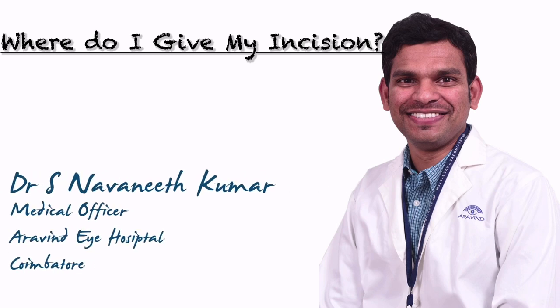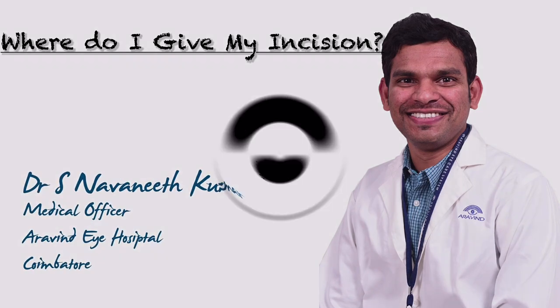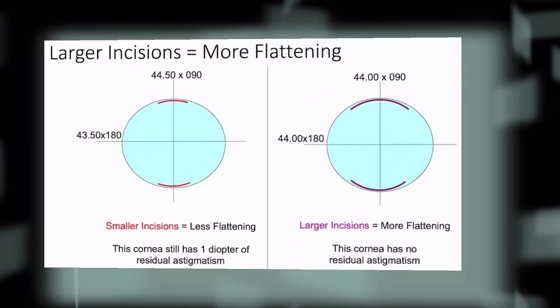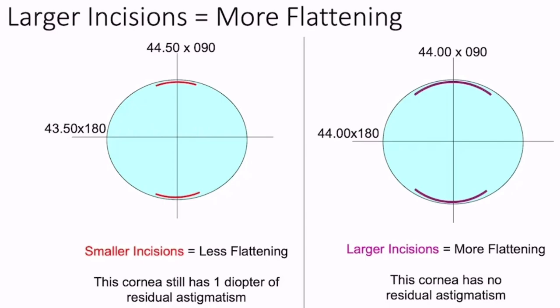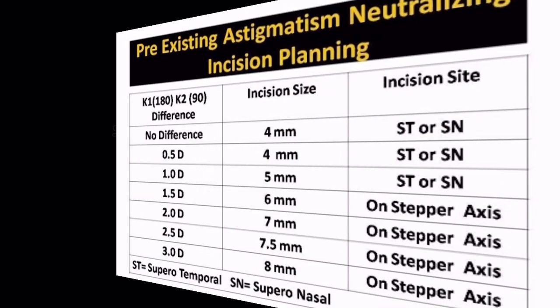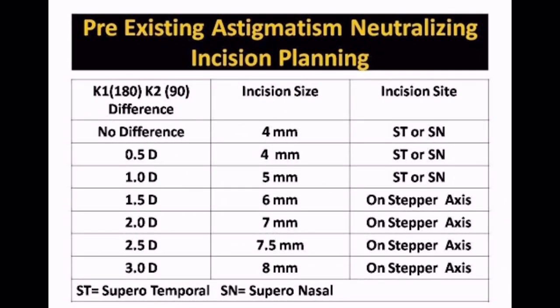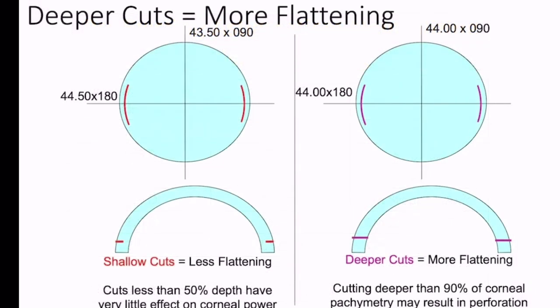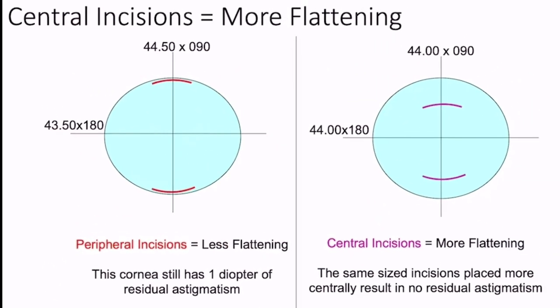Hello, this is my talk on how to utilize corneal incisions to maximize visual outcomes. Corneal incisions should be given on the steeper axis, and the larger the incision, the more flattening is induced. For example, to induce two diopters of astigmatic correction, we need around a six to seven mm incision. Entering more deeply or more centrally into the cornea induces more flattening.